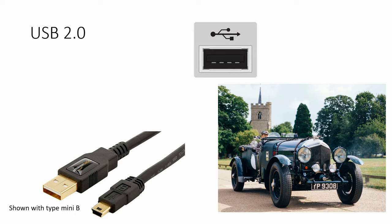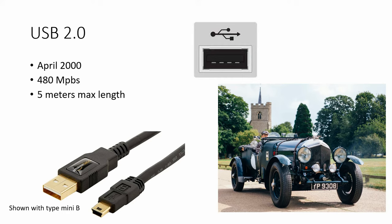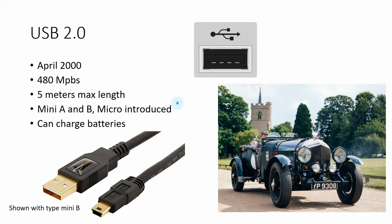Next up is USB 2.0. I've got a picture showing one using the mini B connector, and these typically have a black port on the computer. So if you see a black USB port on the back of your computer or laptop, that probably means it's USB 2.0. These came out around April 2000 and speeds go up to 480 megabit per second — a massive increase from the 1.0 series. They can go up to 5 meters maximum length, and this is when they introduced the mini A and B series. USB 2.0 also introduced the ability to charge batteries through USB.